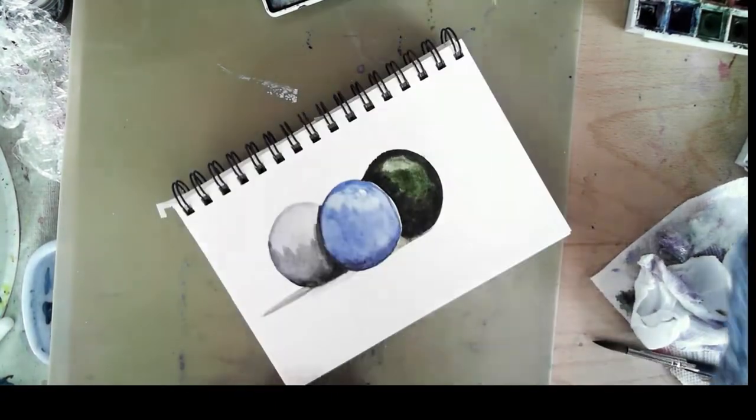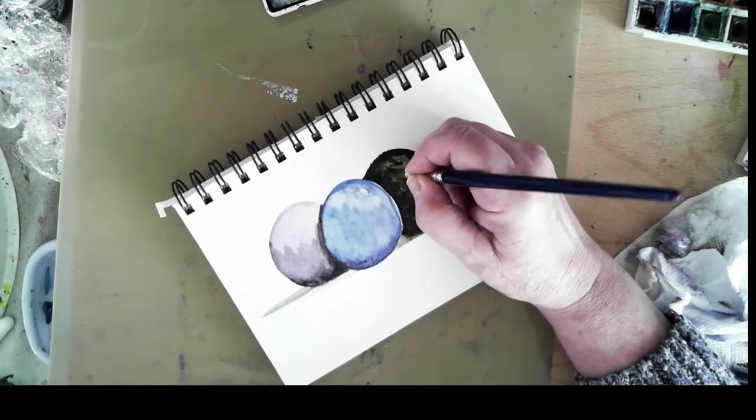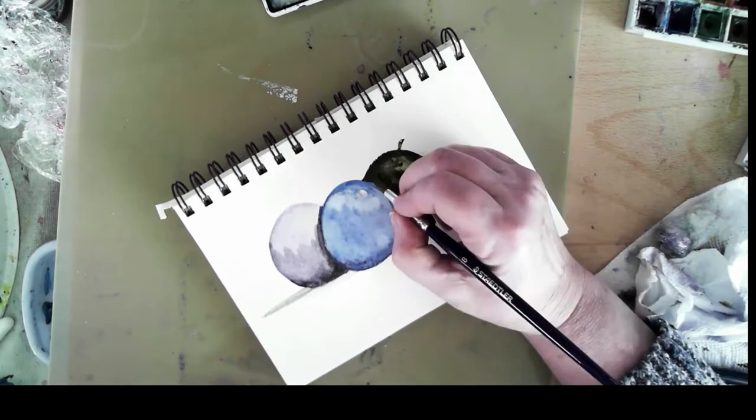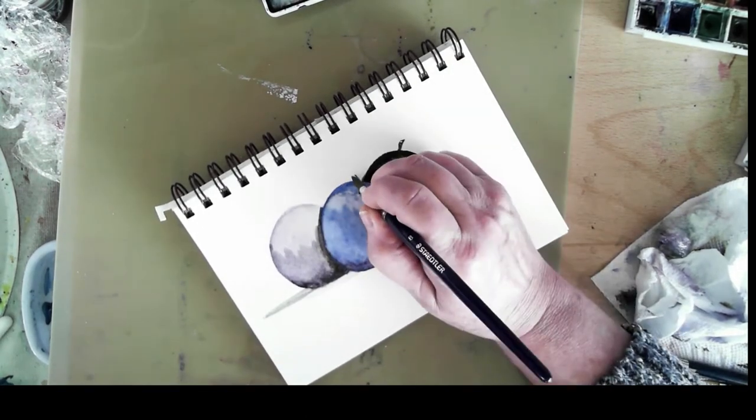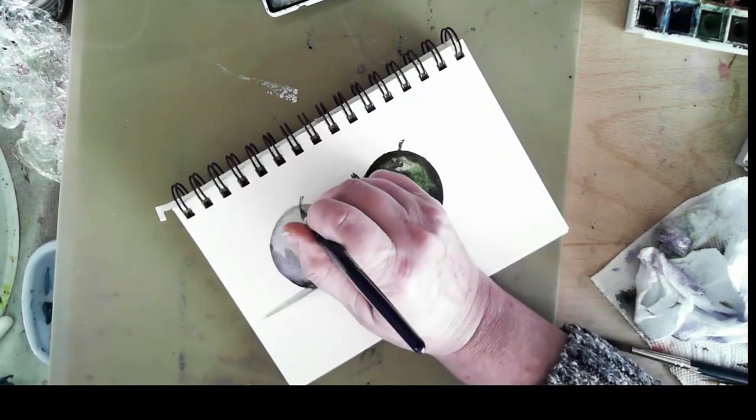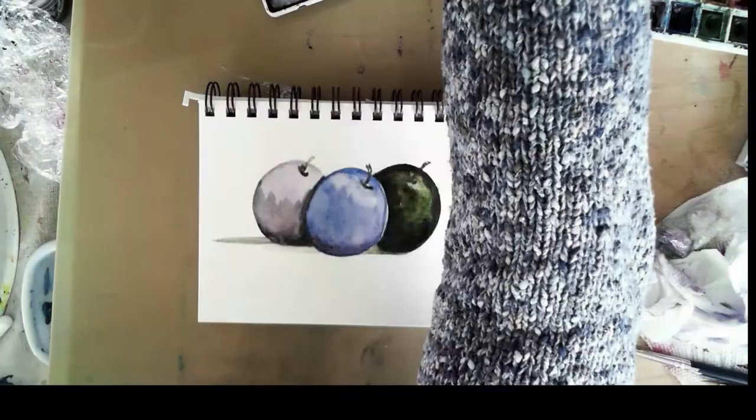So you can see that I'm continuing to add the depth to the base of the plums and shadowed areas to indicate that they are sitting on a flat surface.